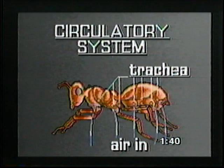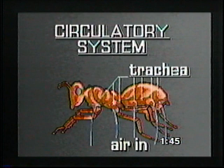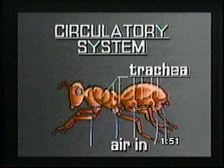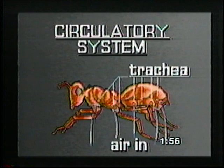Their circulatory system is not greatly developed because they don't depend on the circulation of blood for their oxygen supply. Insects have tiny branching tubes that end in little air holes in the sides of the body. The air comes in right from the surface of the body and goes directly to the cells. These little tubes are called trachea. It's like having hundreds of wind pipes in its stomach to take in air. The rate of breathing depends on the size of the creature — the smaller it is, the faster it breathes.